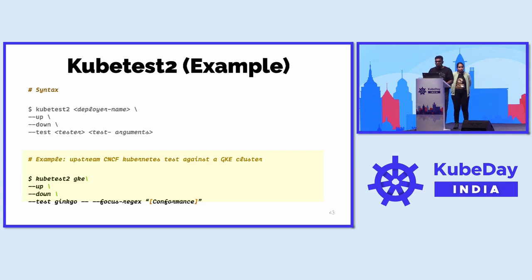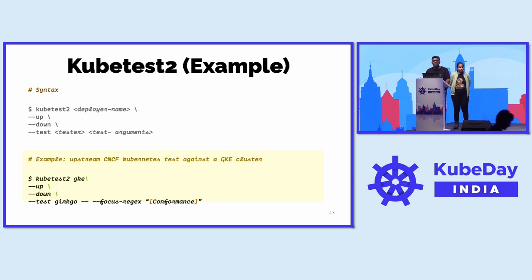As an example, this is the upstream CNCF Kubernetes test against a GKE cluster. So: kubetest2 with deployer name GKE, you bring the thing up and down, and we are running the GINKO tester telling it to run conformance tests.